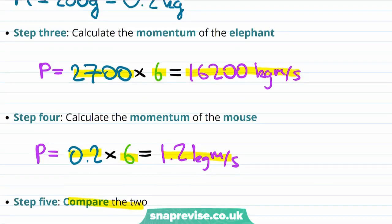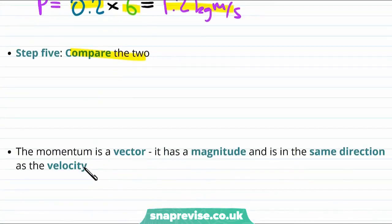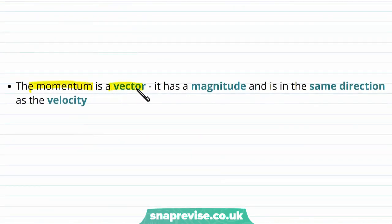The final thing worth mentioning is that the momentum is a vector. It has a magnitude, and it is in the same direction as the velocity. And since it has a direction, that's what makes it a vector.